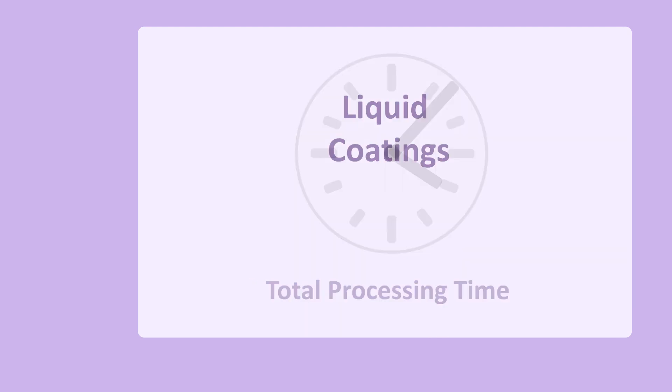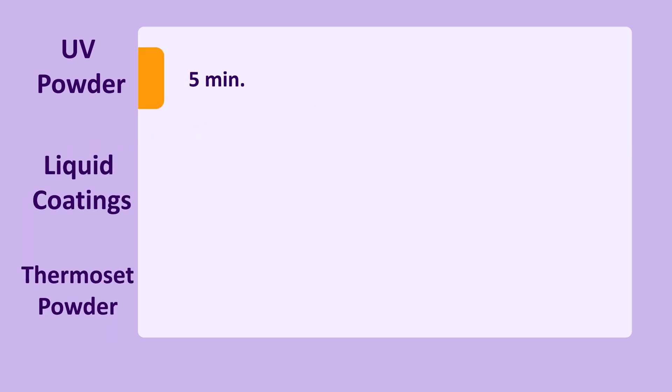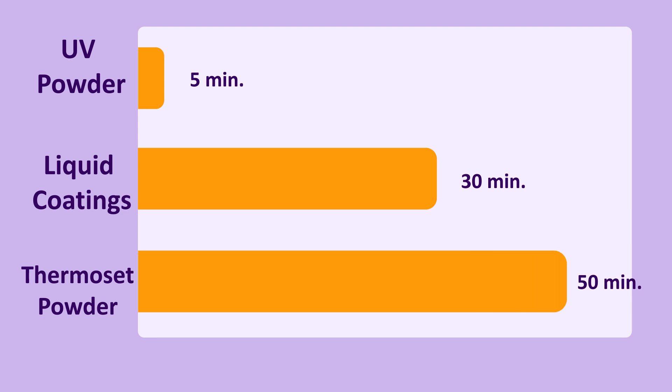For example, when comparing the total processing time of liquid coatings or thermoset powder, UV powder can be applied and cured in 5 minutes total, while liquid coatings and thermoset powder can take 30 to 50 minutes respectively.